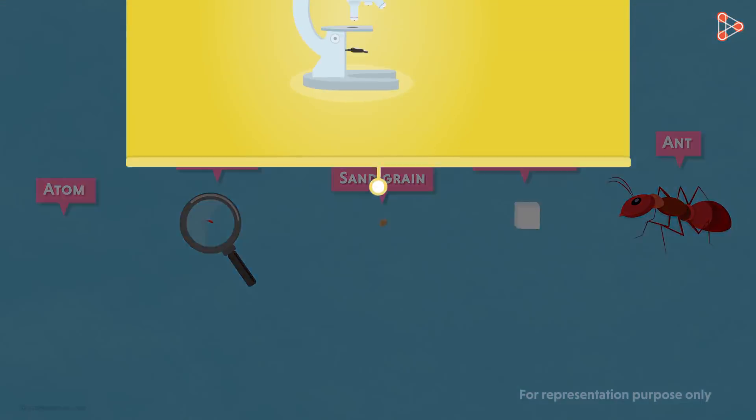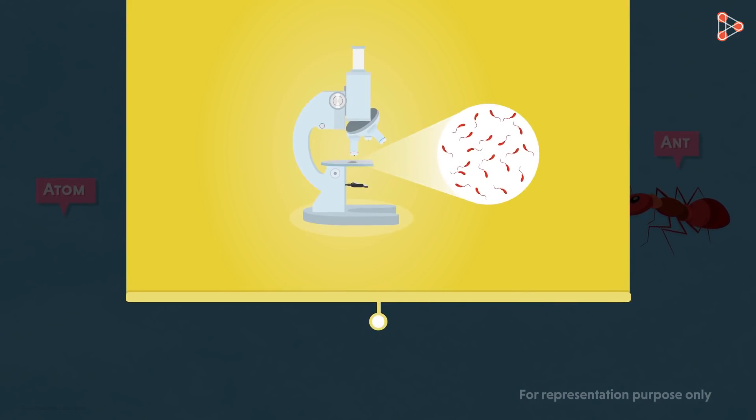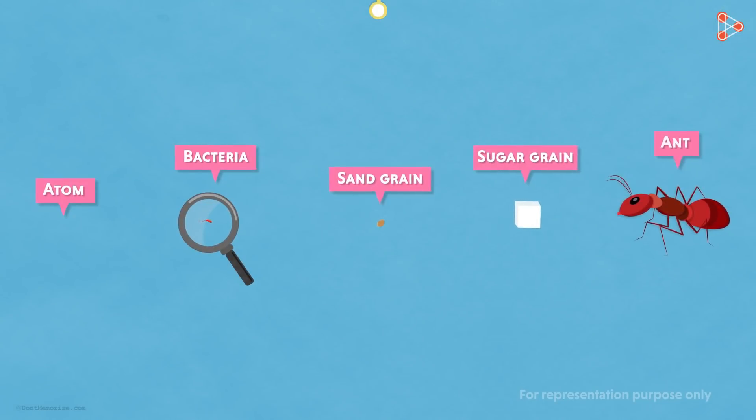But the fact is that the bacterium can be observed at least using a microscope. However, seeing a single atom is nearly impossible. Yes, the size of an atom is that small.